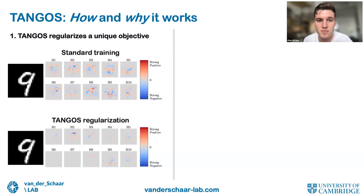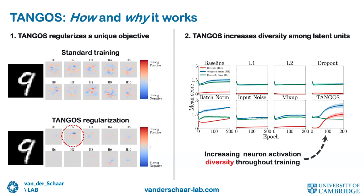Comparing gradient attributions of 10 latent neurons with respect to input features for models trained with and without TANGOS, the TANGOS model's attributions are specialized and orthogonal — each attending to specific and non-overlapping features relevant for discrimination between classes. For example, hidden neuron two detects the top of the digit nine, important for distinguishing nines from fours. We leverage ensemble theory to show TANGOS results in more diversity among latent neurons, motivating its use in the tabular domain.